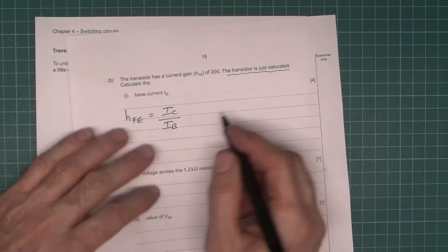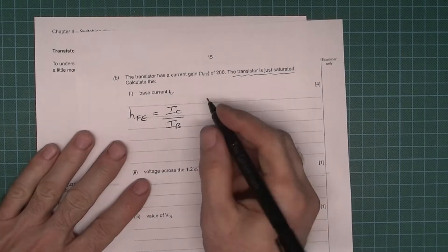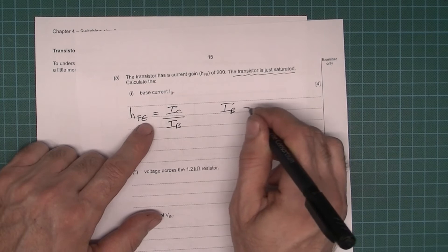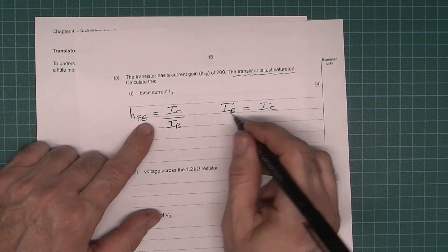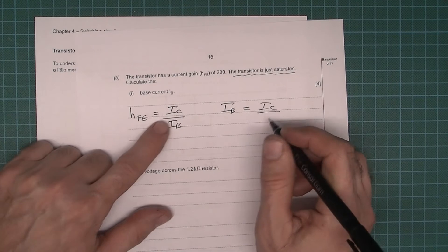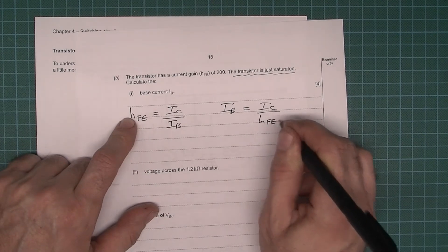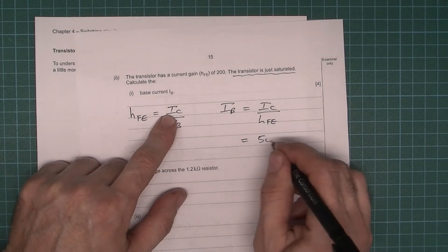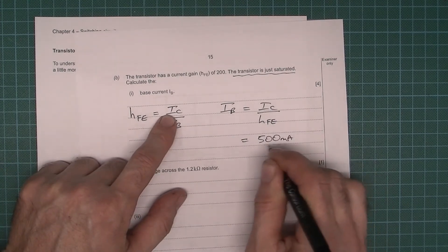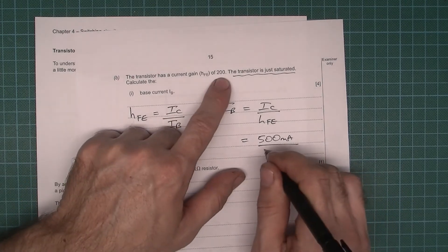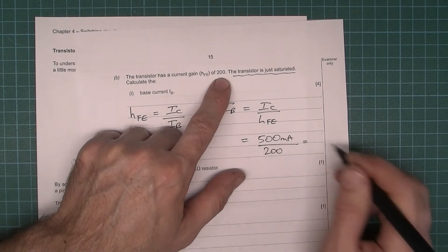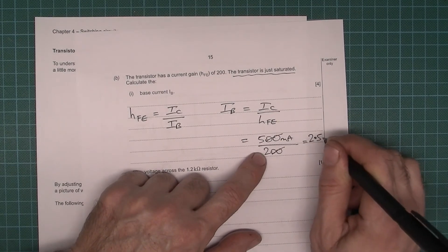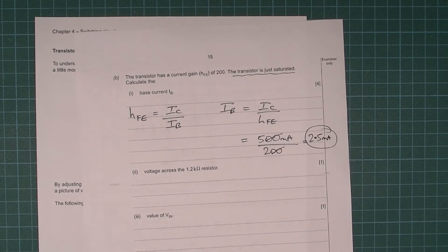We want to calculate the base current, so we need to rearrange this formula. So IB, the base current, is going to be equal to the collector current over the transistor gain HFE. And so we've got 500 milliamps and the gain was 200. And so, well, we can just cancel that out, can't we? 5 divided by 2, so 2.5 milliamps. There's your answer.